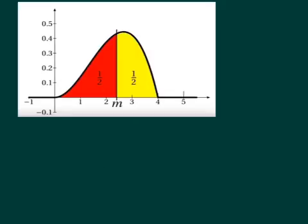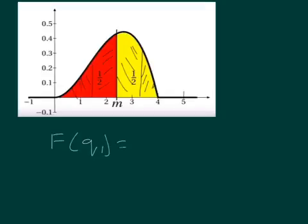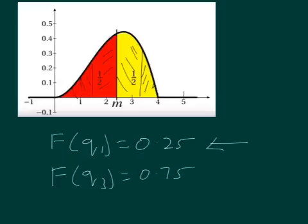Going back to the original diagram, the median is where F of m equals a half. We can also use this approach for lower and upper quartiles, splitting the distribution into quarters. The lower quartile is where F of x equals a quarter, and the upper quartile is where F of x equals 3/4. We can solve these equations to work out the lower and upper quartiles.